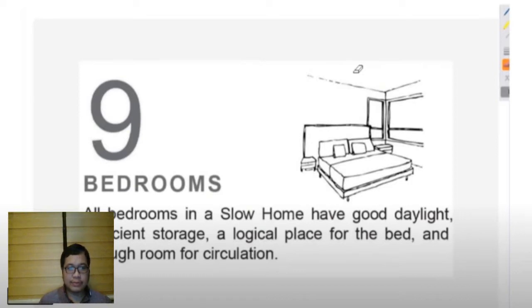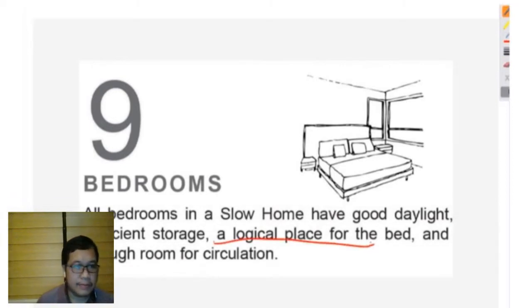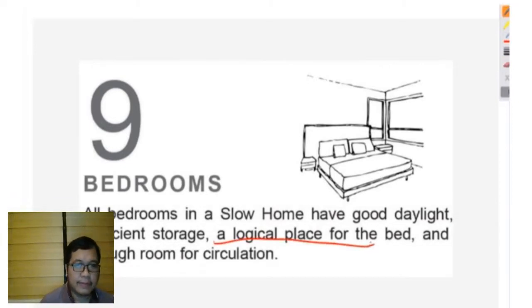In a slow home, the bedroom should have good daylight, sufficient storage, a logical place for the bed — which is really important — and enough room for circulation. Before we get to the logical place for the bed, let's talk about daylight first, because it's not something we really need to draw, but it is a really important principle.